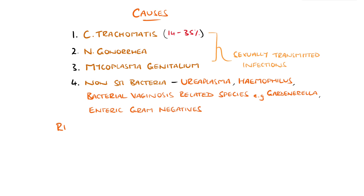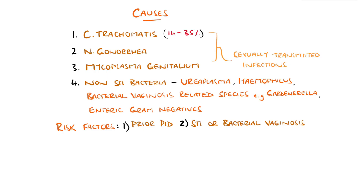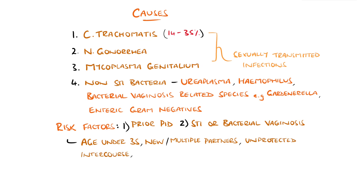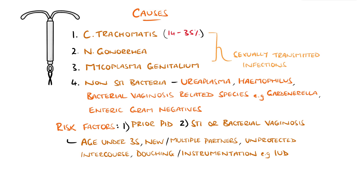Risk factors include prior PID or presence of an STI or bacterial vaginosis. As such, risk factors for STI and bacterial vaginosis are also risk factors for PID, including age under 35, new or multiple sexual partners, unprotected intercourse, douching, and recent intrauterine instrumentation such as IUD insertion or abortion.